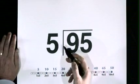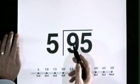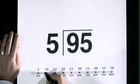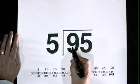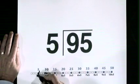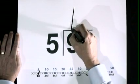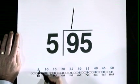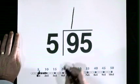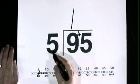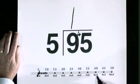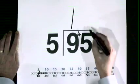95 divided by 5. 9 lives here. 5 goes into 9, 1 time, remainder 4. 5 goes into 45, 9 times.